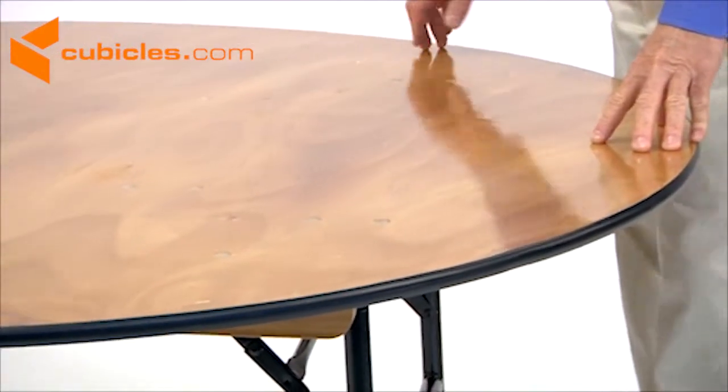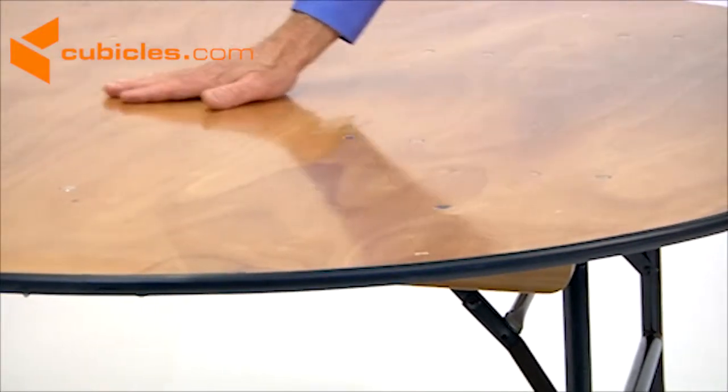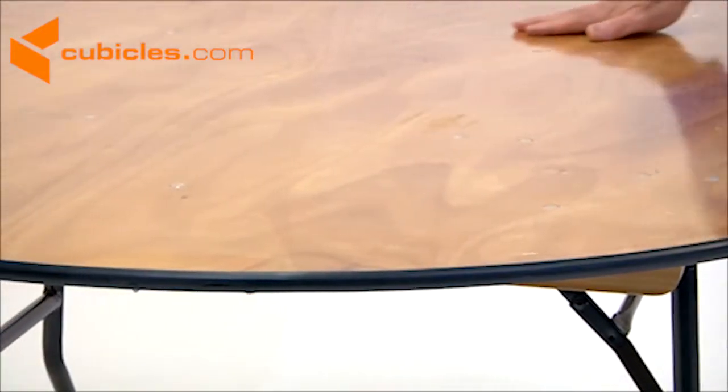This table features a three-quarter inch thick plywood top with a clear coated finish that prevents tablecloth snags and splinters.